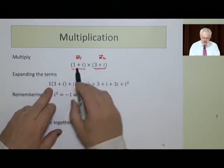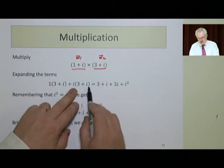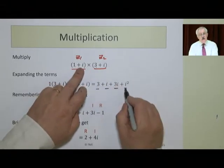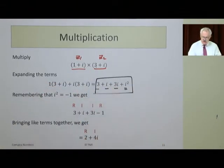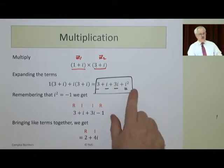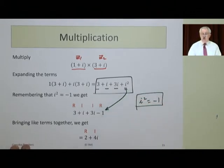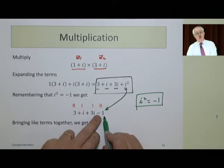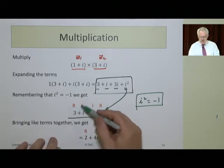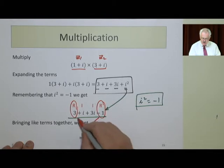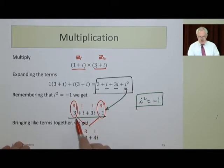The first by the first gives us 1 times (3 plus i), then i times (3 plus i). So 1 by 3 is 3, 1 by i is i, i by 3 is 3i, and i by i is i squared. That's our answer at this point. But we note that by definition, i squared equals minus 1. So that gets changed to minus 1. Now we've got 3 plus i plus 3i minus 1. We can group these in terms of reals and imaginaries. We have two reals, 3 and minus 1. The two imaginaries get added up. 3 minus 1 becomes 2, i plus 3i is 4i.